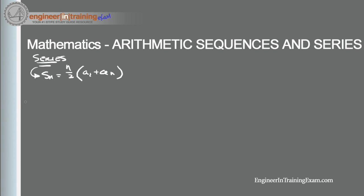Let's look at an example. We're asked to find the sum of the arithmetic sequence given by the summation from i = 1 to 20 of (0.2i + 5). We can see that the sequence starts at i = 1 and ends at i = 20, so we want the sum of 20 terms.